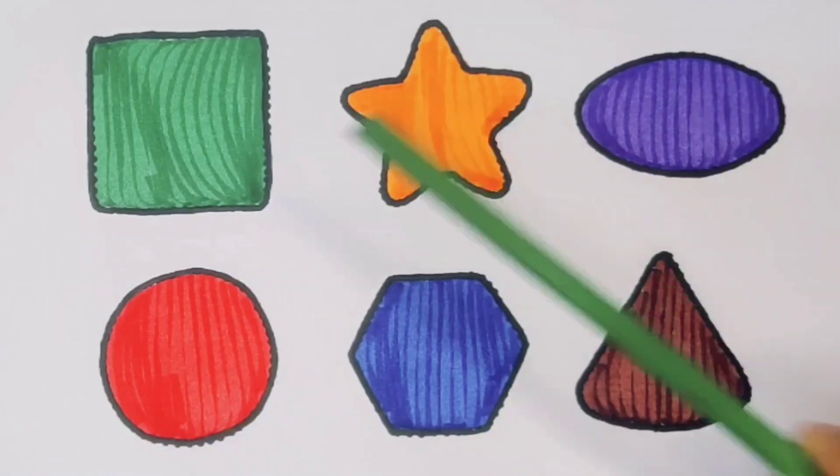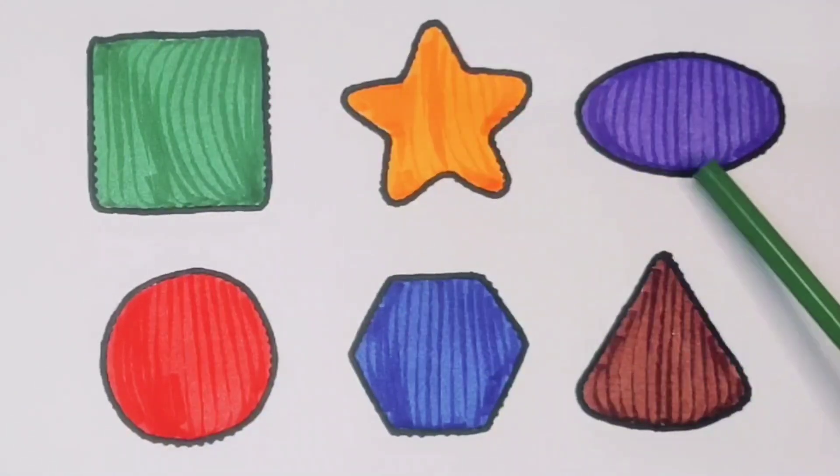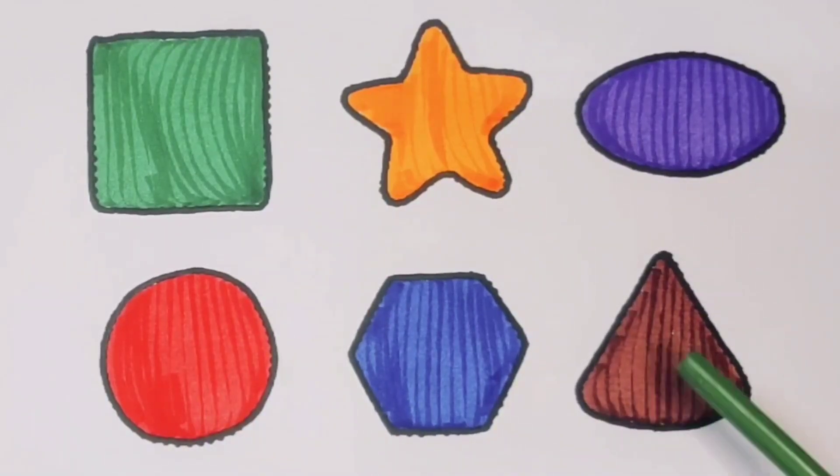What we learned: we learned green color square, orange color star, purple color oval, red color circle, blue color hexagon, chocolate color triangle.